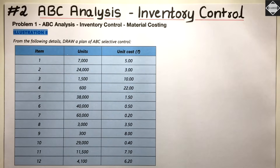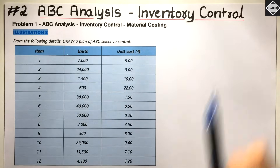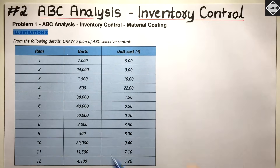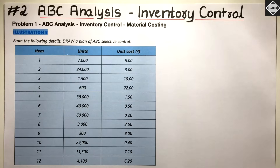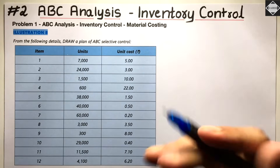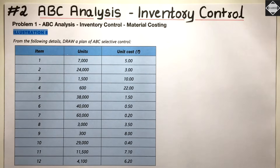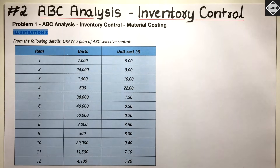Welcome back to Sahab Academy. Today, in the second video on ABC analysis — a technique of inventory control — we are going to solve a question from the ICAI study material based on ABC analysis. This is Illustration 8 from the Material Costing chapter. We will learn how to break inventory into three different categories: A, B, and C. We have 12 different items in our inventory that have to be grouped under just three categories.